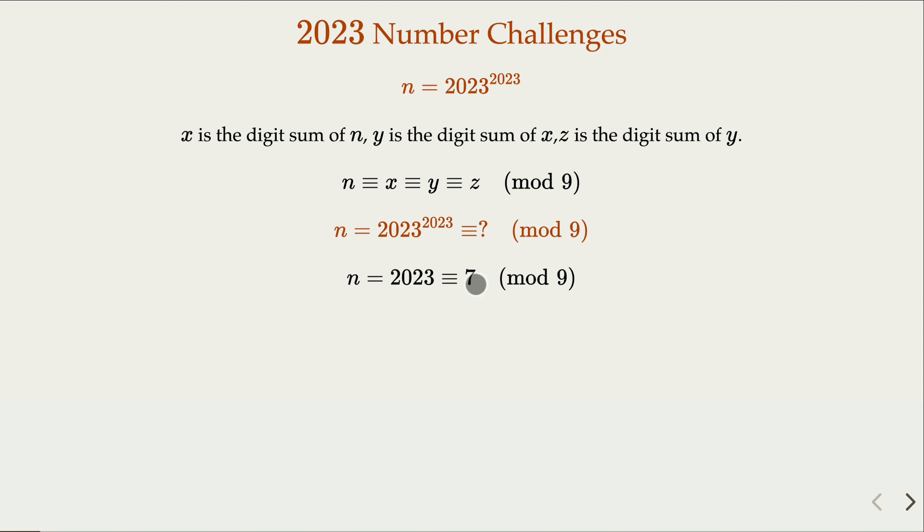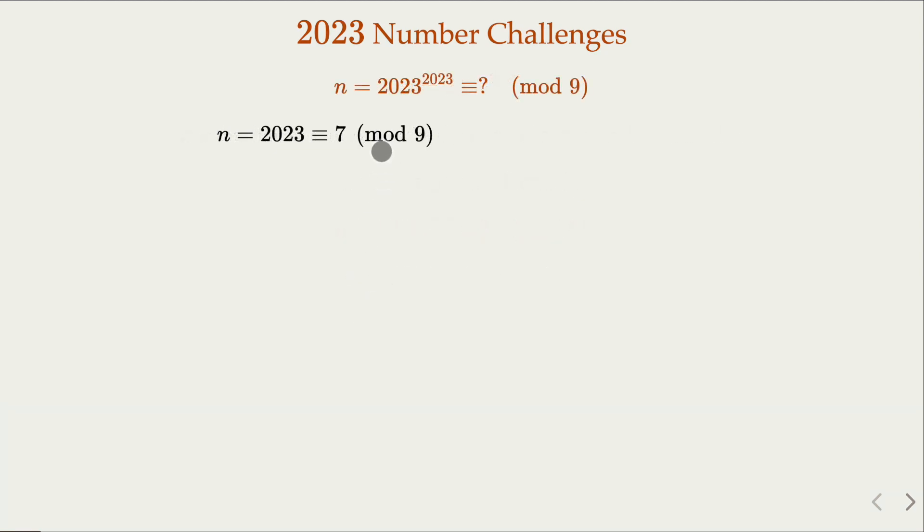So we raise that to the 2023rd power. We need to consider what is the value mod 9. When we look at this raised to integer power, mod 9 is going to be in a cycle. For example, 7 squared is congruent to 4, but 7 to the 3rd power is congruent to 1.